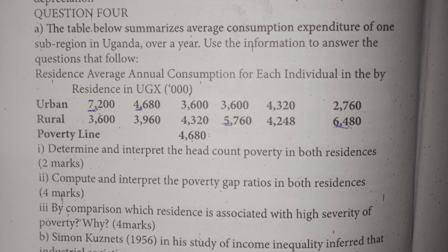They want us to determine and interpret the head count poverty in both residences. The head count ratio measures the percentage of people that live below the poverty line. We do not consider individuals that earn income equal to or above the poverty line. So in the urban area, the person with 7,200 and the person with 4,680 will not be considered.